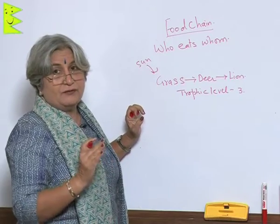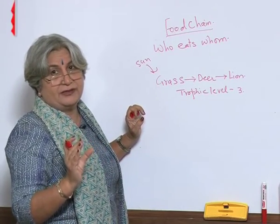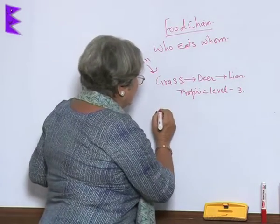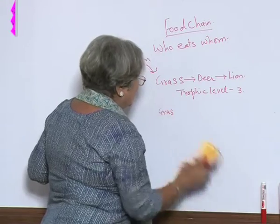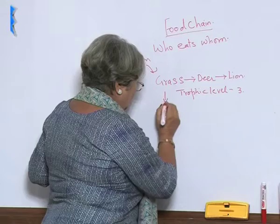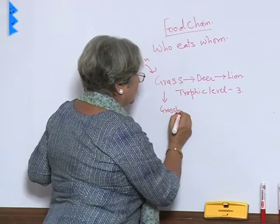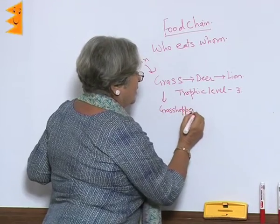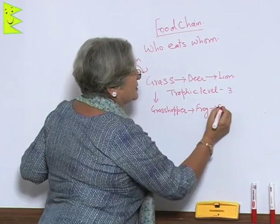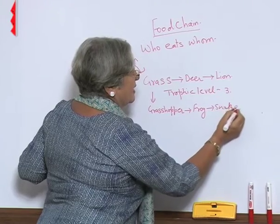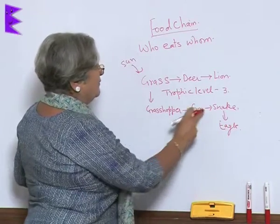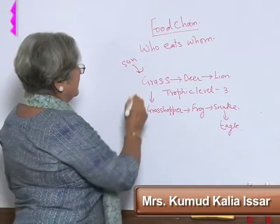But not all food chains are restricted to three levels — sometimes there are more. For example: grass is eaten by a grasshopper, the grasshopper is eaten by a frog, the frog by a snake, and the snake by an eagle. So here we have five trophic levels.